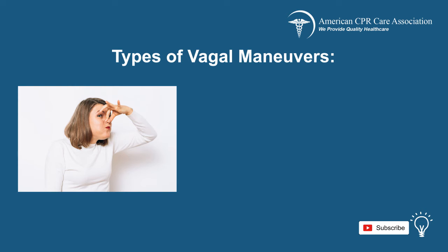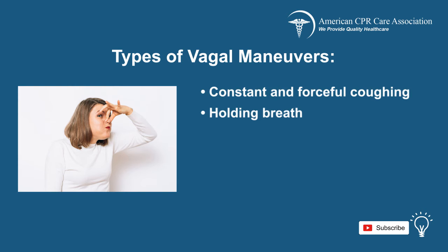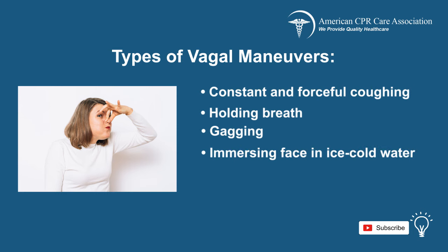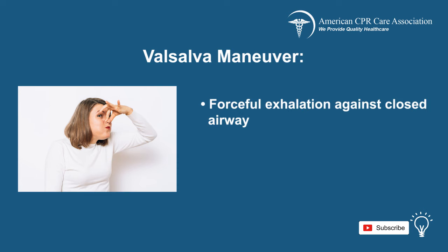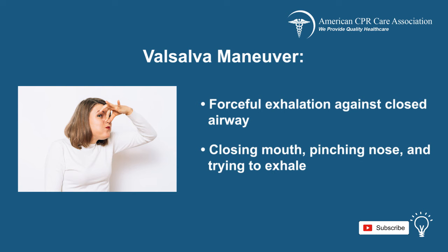Different types of vagal maneuvers include constant and forceful coughing, holding your breath, gagging, immersing your face in ice-cold water, applying carotid sinus pressure by putting slight pressure on the carotid sinus for about five seconds, or the Valsalva maneuver, which is forceful exhalation against a closed airway. An example of the Valsalva maneuver is closing your mouth while pinching your nose and then trying to exhale, as if blowing up a balloon.